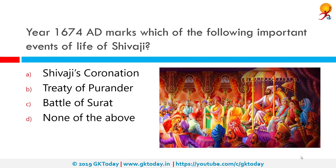The year 1674 AD marks which of the following important events in the life of Shivaji? The correct answer is his coronation. Shivaji was formally crowned Chhatrapati, meaning Lord of the Umbrella, on June 6, 1674 at Raigarh Fort and given the title Kshatriya Kulavanta Sinhasanadishwar Chhatrapati Shivaji Maharaj.